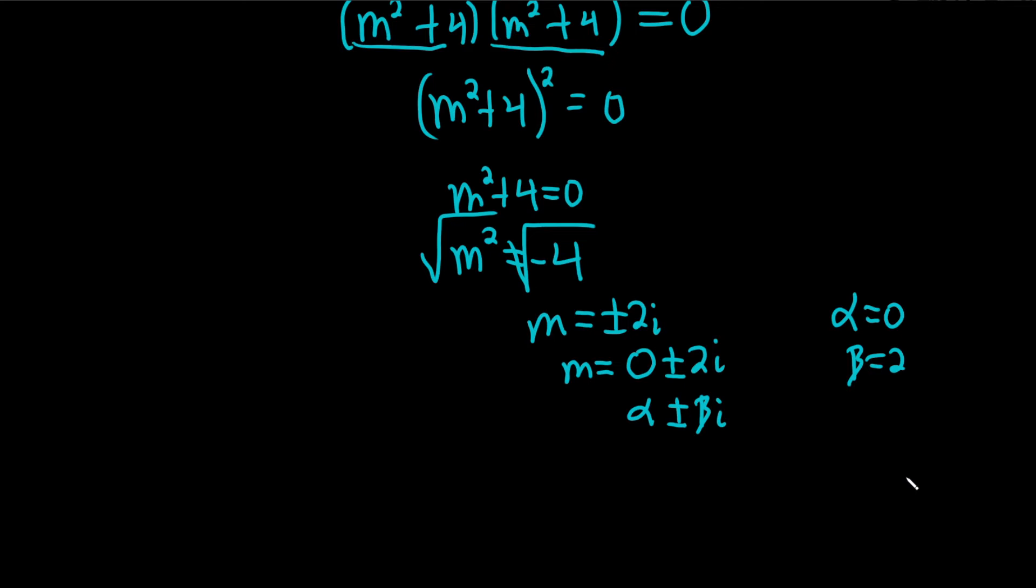And so what happens is when you get an answer like this, your answer has the form c1 e to the alpha x cosine beta x plus c2 e to the alpha x sine beta x.